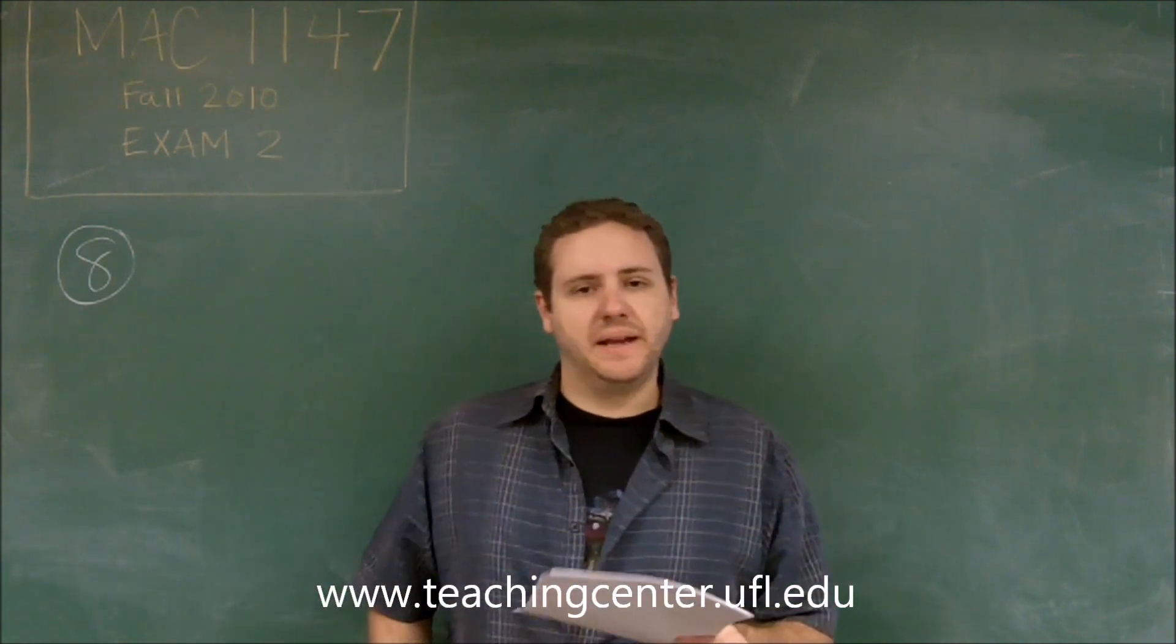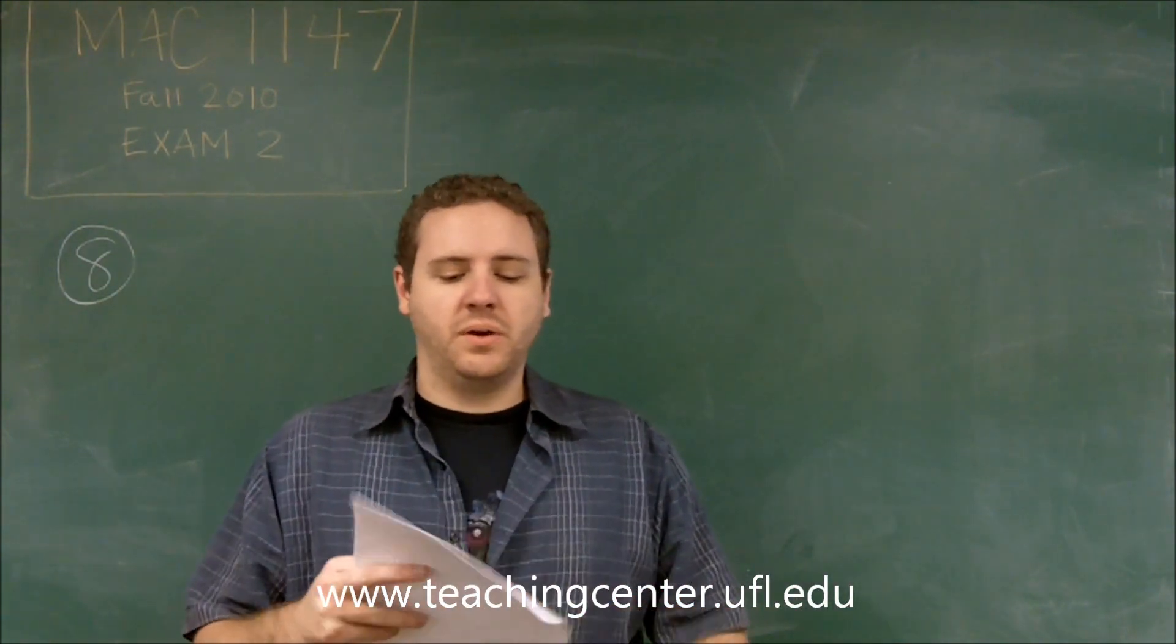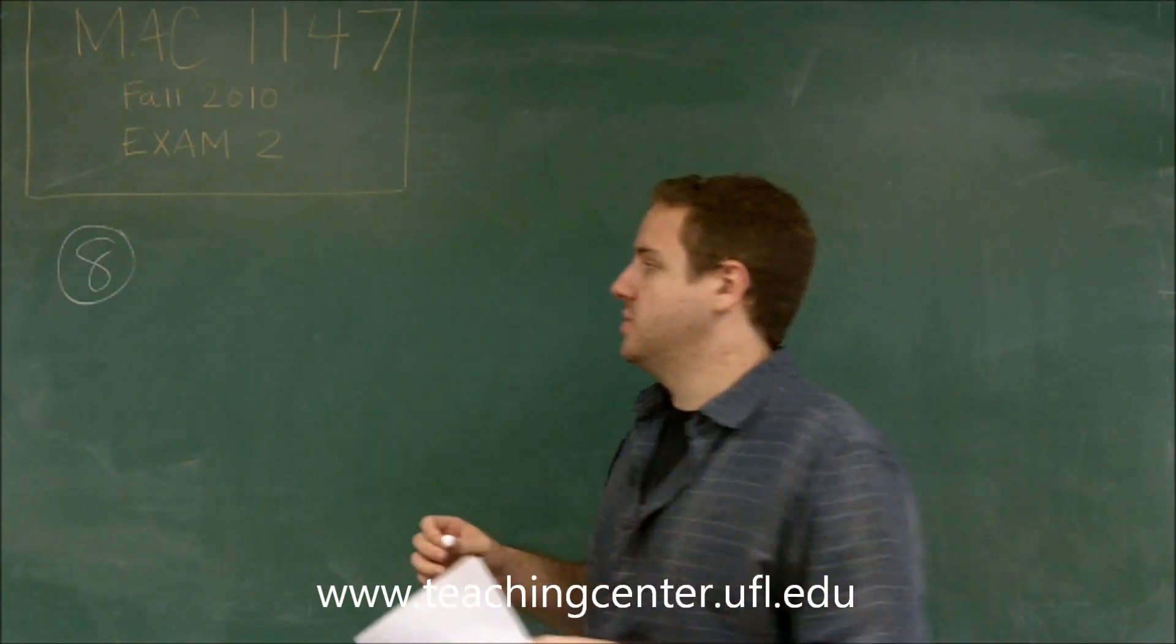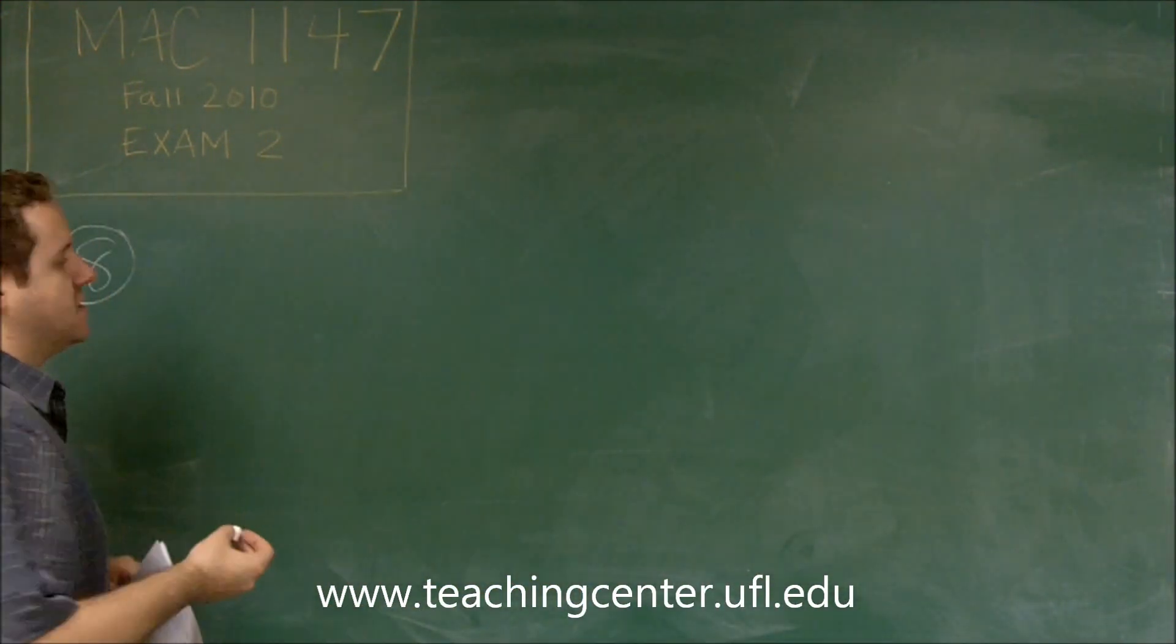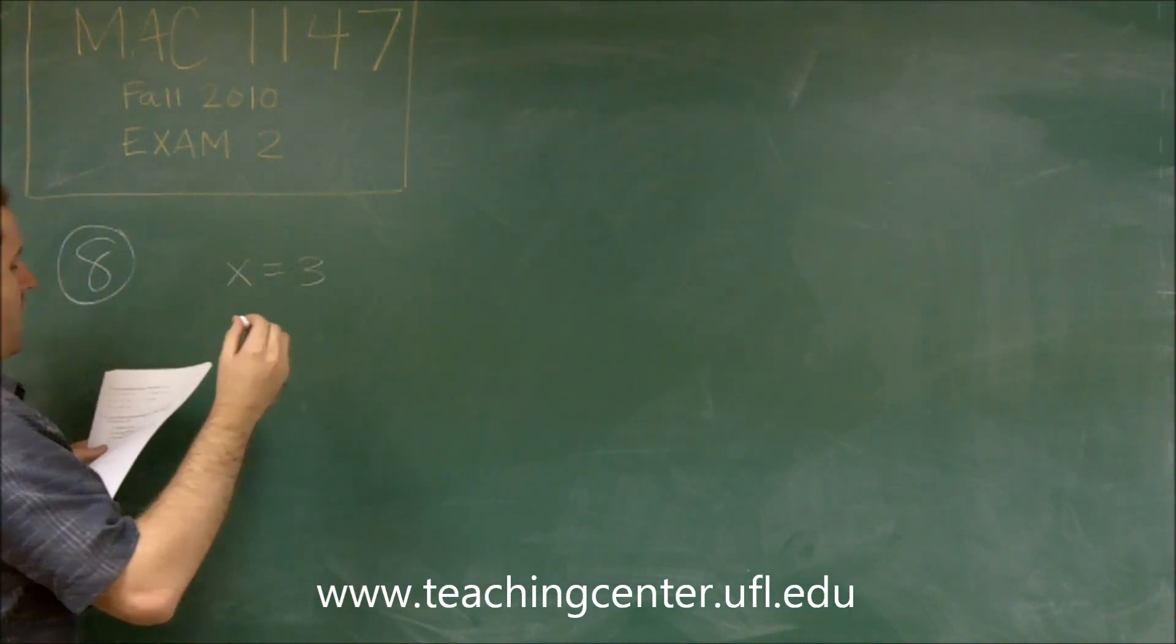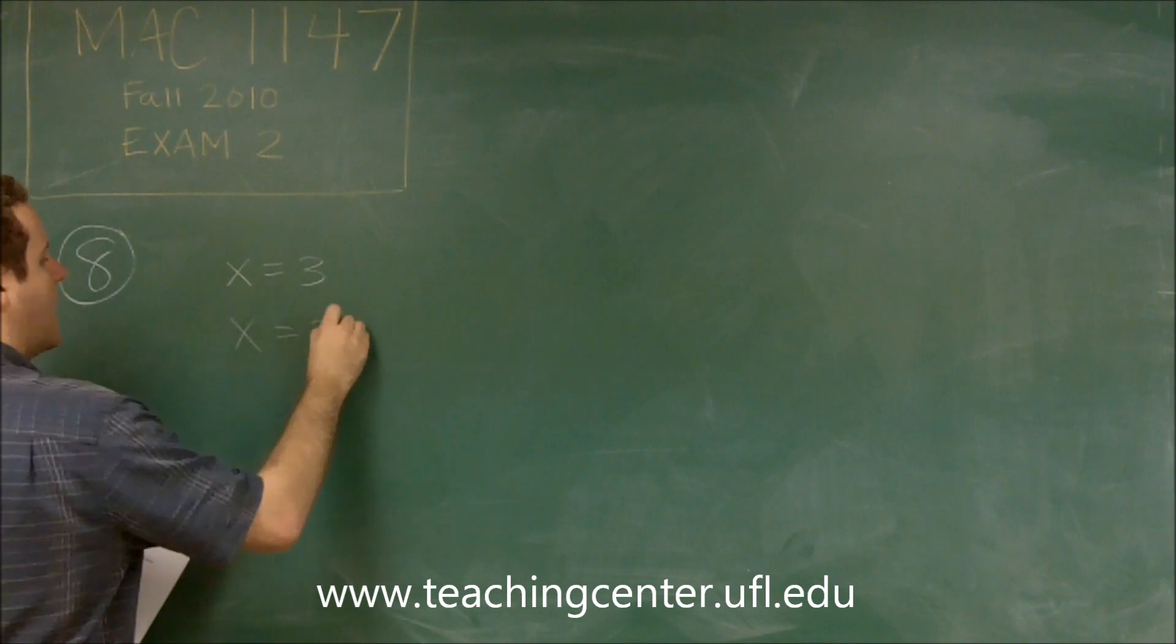Okay, so for problem number eight, we're asked to find a polynomial of degree three that has the zeros two plus i and three. So what that tells you is that for the function to be zero, we know that x equals three is the solution, and we know that x equals two plus i is the solution.